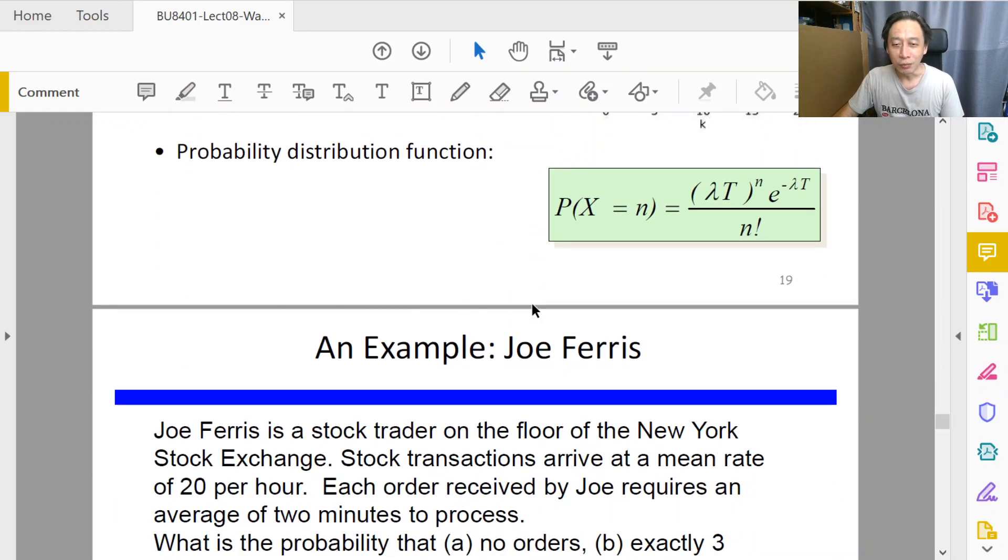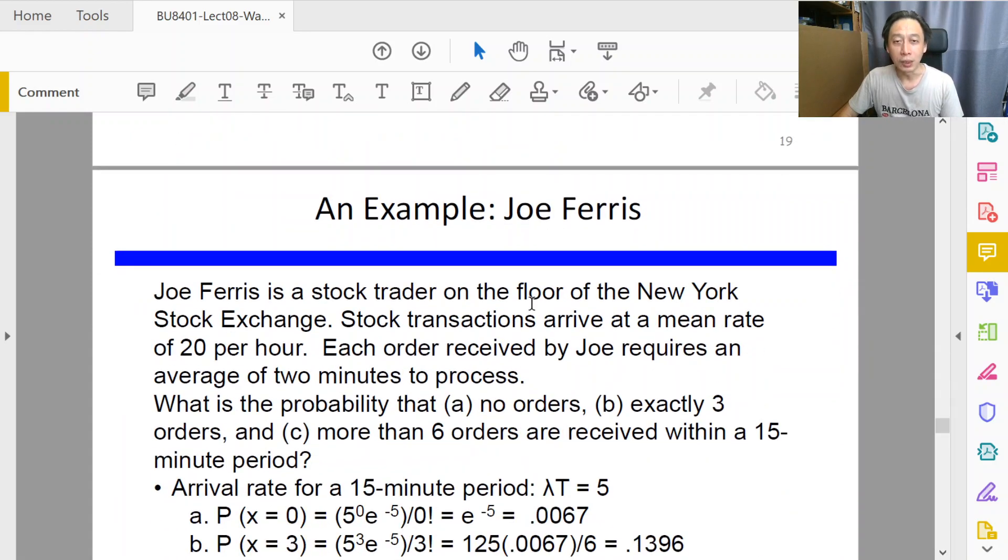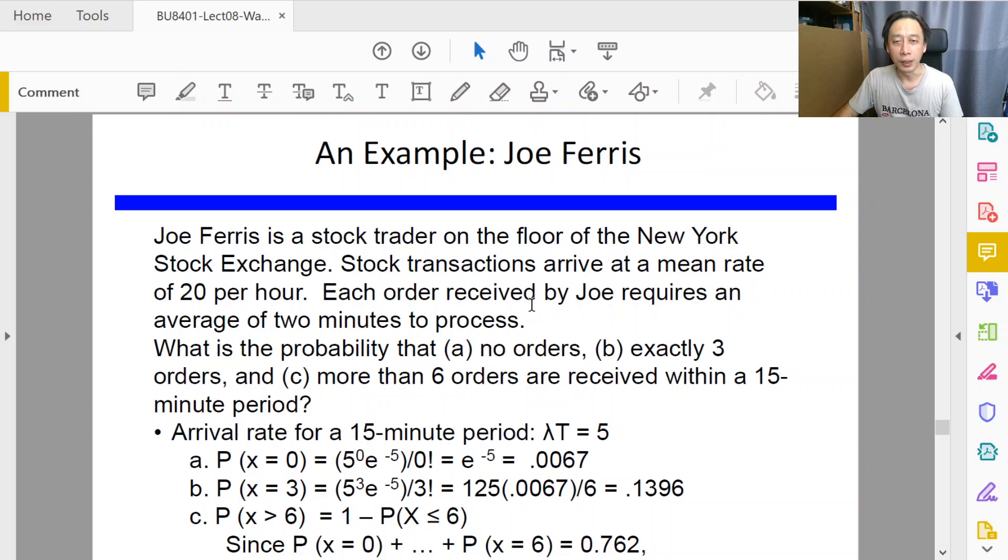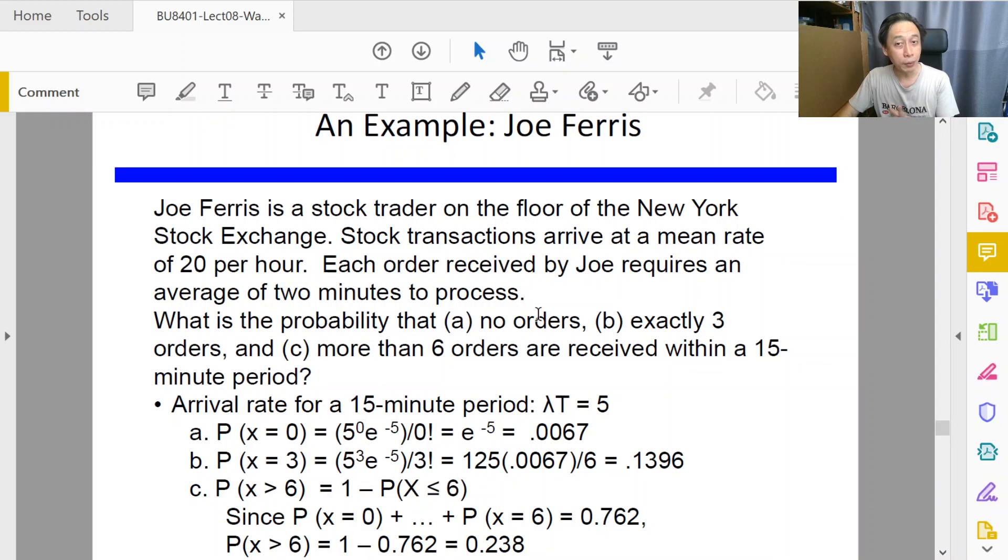So oftentimes we might be confused because from the set of queue system formulas, we also have probability of n customers in the queue system. That probability is a different probability—it is reflecting on the proportion of times if you randomly sample many times that you see n customers inside the system.